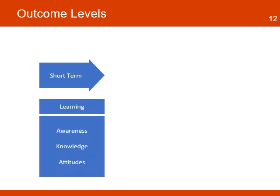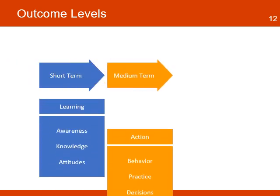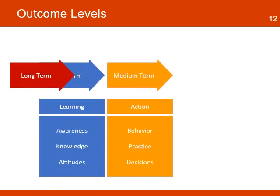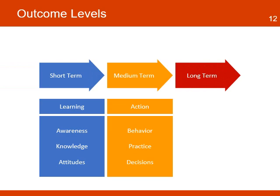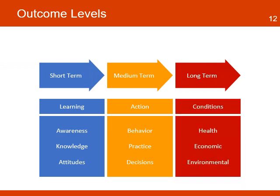Outcomes can be divided into three levels. Short term outcomes are related to learning — they can include changes in awareness, attitude, and skills. Medium term outcomes are related to actions — they can include changes in behavior, practice, and decisions. Long term outcomes are changes related to conditions — they can include health, economic, and environmental.